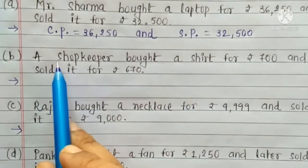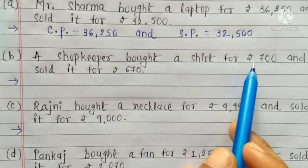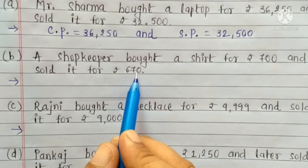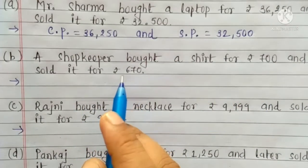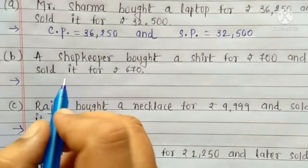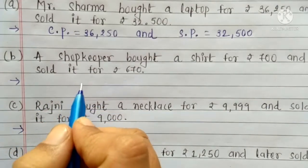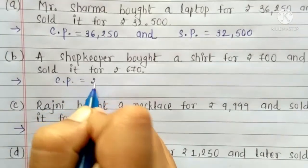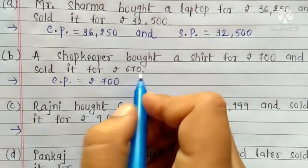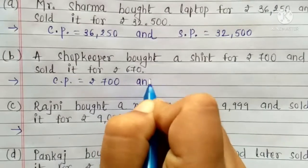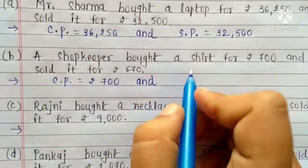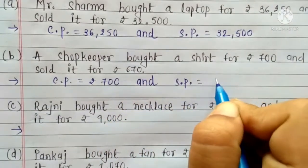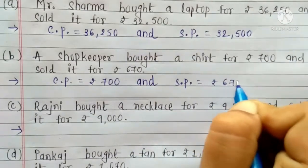B. A shopkeeper bought a shirt for Rs. 700 and sold it for Rs. 670. That means, shopkeeper ने shirt 700 में purchase किया है. So, Cost Price है Rs. 700. And 670 में sell किया है, so Selling Price है Rs. 670.